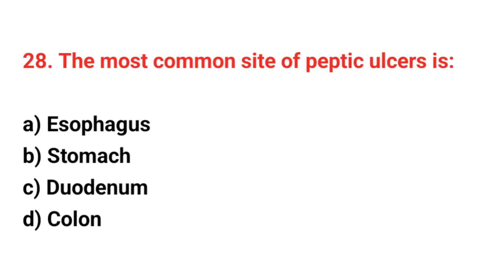Question number 28: The most common site of peptic ulcer is? The right answer is option C: Duodenum.